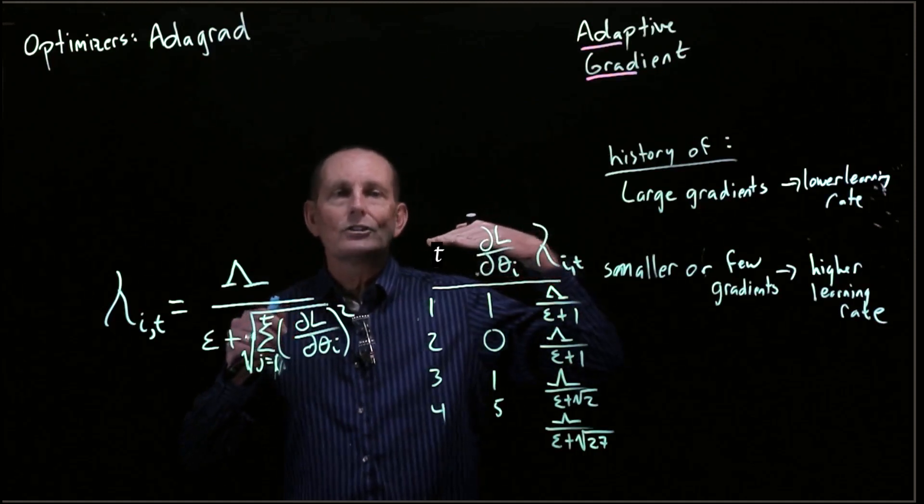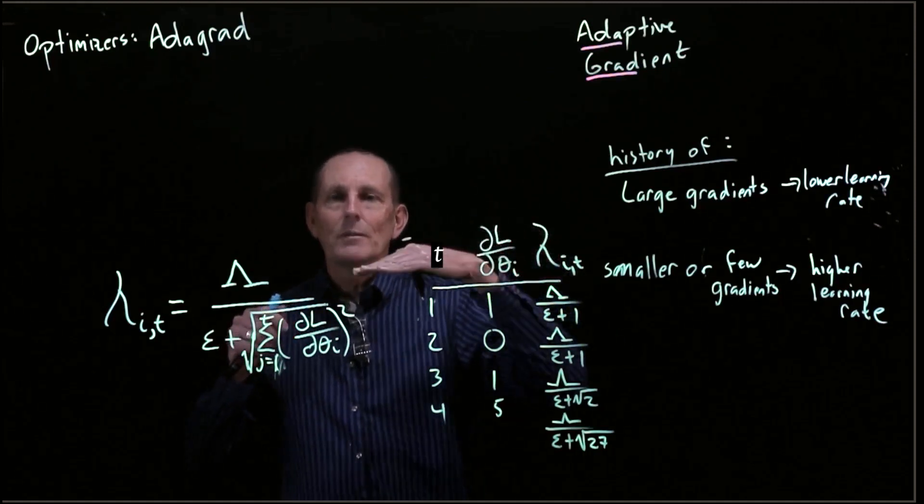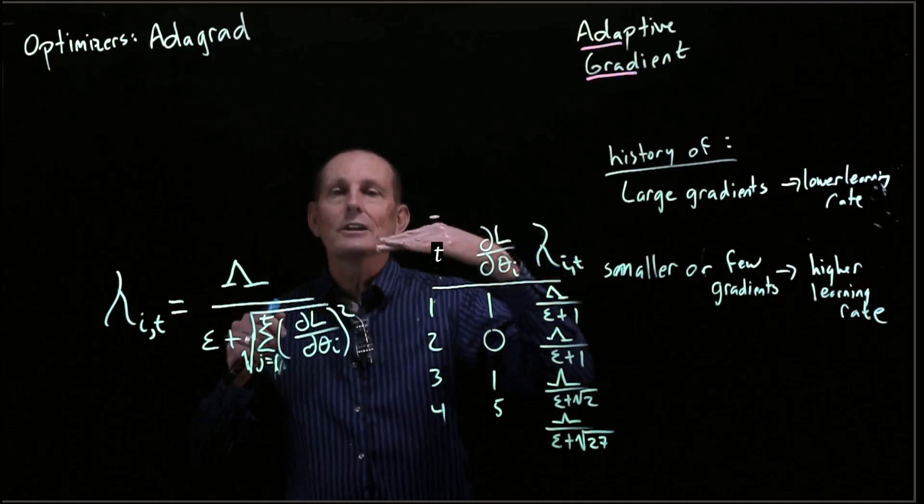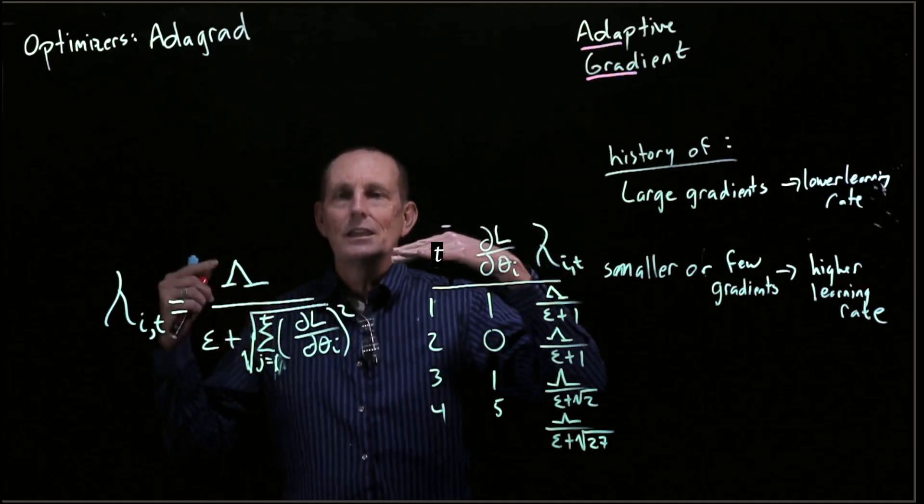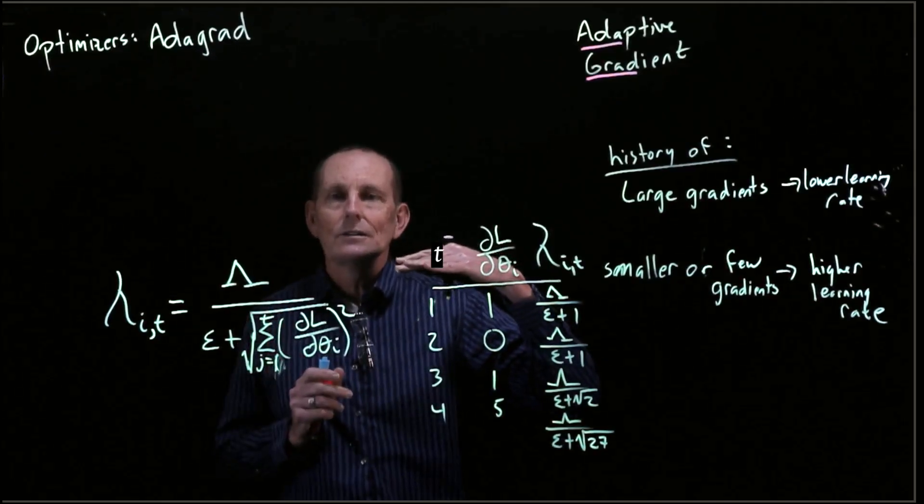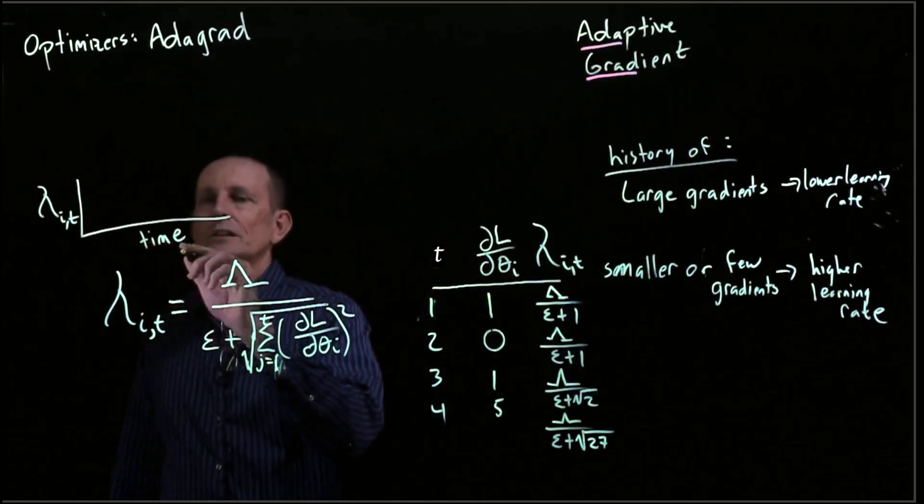So if we look again at this situation where we have a very shallow gradient for one parameter, then we'll have a much higher learning rate than for a different parameter with higher gradients.